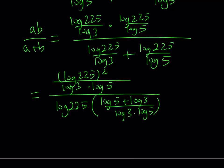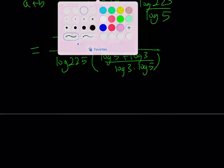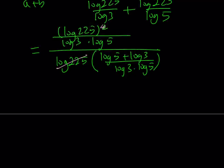This is kind of like dividing two fractions, like a complex fraction. We can simplify this. We can cancel out log 3 times log 5 as a product. And we end up with something nicer: log 225 over log 5 plus log 3.